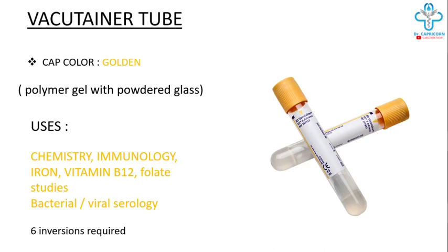The golden color vacutainer tube has polymer gel with powdered glass. It is used for chemistry, immunology, iron studies, vitamin B12 and folate study, and bacterial and viral serology. Six inversions are required.